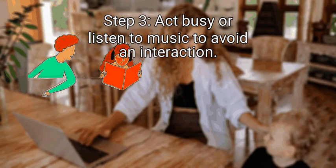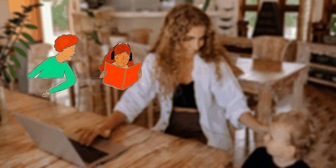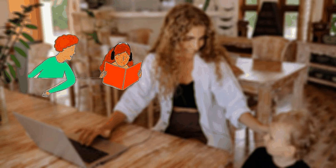Step 3: Act busy or listen to music to avoid an interaction. Check your phone and act like you've just seen an important message, or pull out your homework or client file to review. Listening to music while walking the halls or working will help you minimize your interactions with everyone, including the person you're ignoring. If someone else you know is close by, start a conversation with them. If you find music distracting at work, wear your earbuds but don't play music — they'll never know you're just wearing them to ignore.